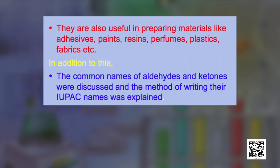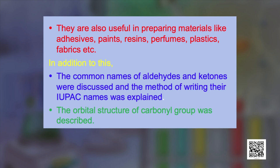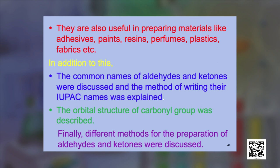In addition, the common names of aldehydes and ketones were discussed and the method of writing their IUPAC names was explained. The orbital structure of the carbonyl group was described. Finally, we discussed different methods for the preparation of aldehydes and ketones — both general methods that yield either aldehydes or ketones, and methods specifically used for aldehydes or for ketones. We hope you have enjoyed learning from this session. Thank you very much.